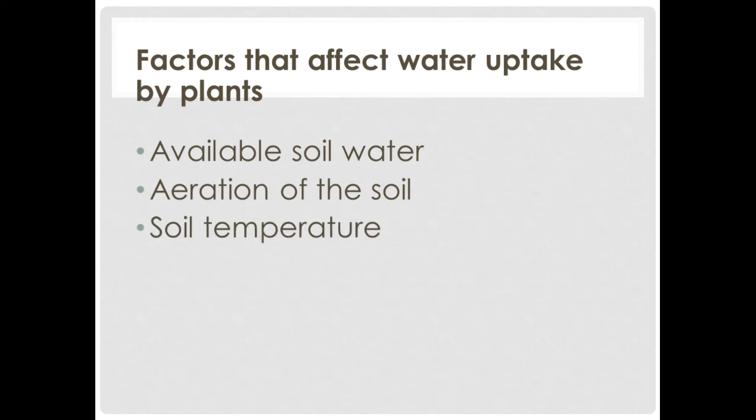Next let's take a look at soil temperature. Soil temperature is known to influence water absorption and ultimately transpiration to a considerable extent. In many plants, normal absorption of water takes place at temperatures between 20 to 35 degrees Celsius, and increasing or decreasing soil temperature will inhibit absorption.